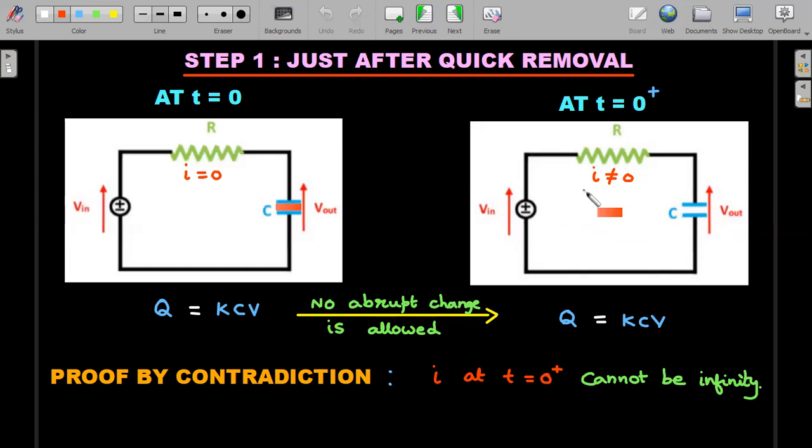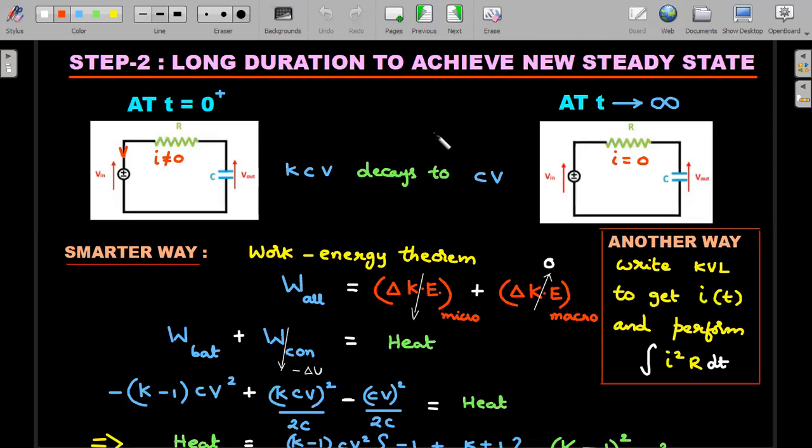Now we go to step two. Lot of things on the board, just follow my lead, try to see where I'm pointing on the board and explaining. Long duration to achieve new steady state: we are looking at t equals zero plus that we already analyzed to t tending to infinity where again it takes time to reach the new steady state. In the new steady state at large period of time, the current again has to be zero.